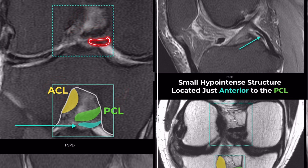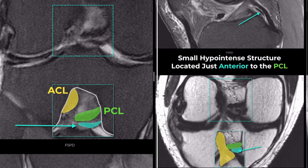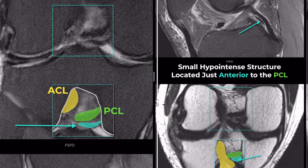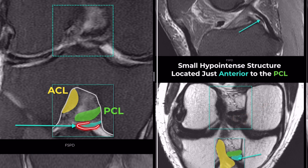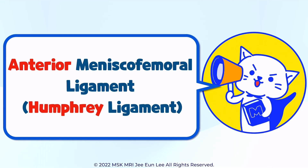What is the aqua color structure we see here? This structure has a distal attachment compared to the PCL and runs just anterior to the PCL on the sagittal image. It can also be seen on the oblique coronal image. Is it a PCL tear or a meniscal fragment? This is the anterior meniscofemoral ligament, also known as the ligament of Humphrey.